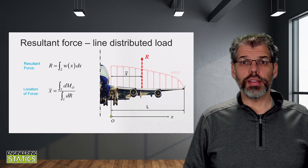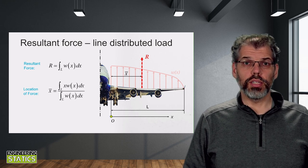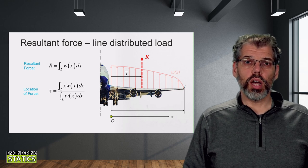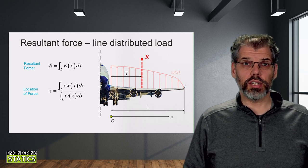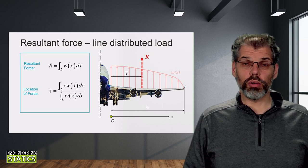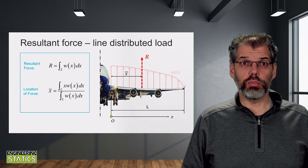Expanding this, we can get that x-bar is equal to the integral of x times w dx over the span of the wing divided by the integral of w of x times dx over the span of the wing. This gives us our two generalized integral equations for the resultant force of a distributed line load.